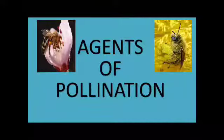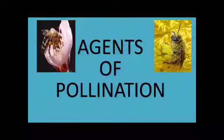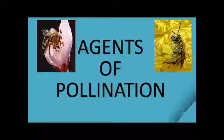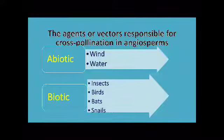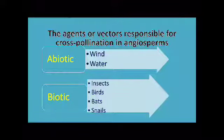In cross pollination, pollen grains need to move from one place to another, so they require some agents for their transfer. The agents or vectors responsible for cross pollination are of two categories: abiotic and biotic. Abiotic means non-living agents, for example wind and water, which can carry pollen grains from one place to another.